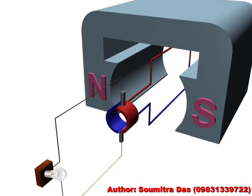Now, the blue part moves up and the red part moves down. Applying Fleming's right hand rule to these parts, we get the direction of current like this. What we see here?